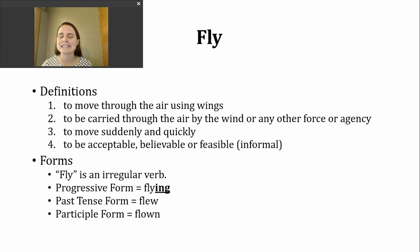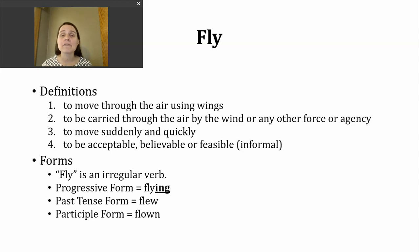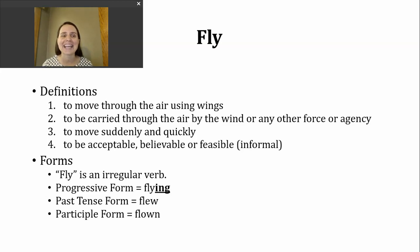We'll look at some examples of that a little later. Fly is an irregular verb. To make the progressive form, all we need to do is add I-N-G. The past tense form is pronounced flew, F-L-E-W, and the participle form is pronounced flown, F-L-O-W-N.